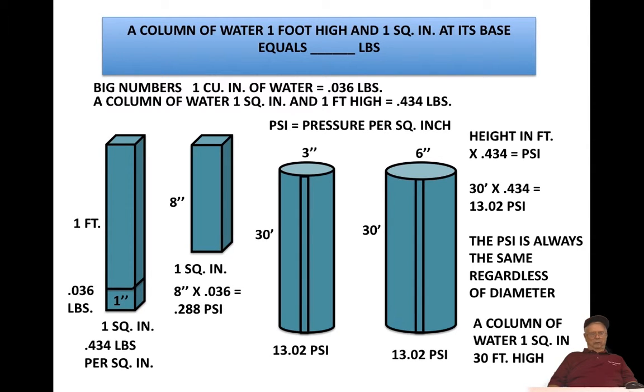A big number is one cubic inch of water equals .036 pounds, and a bigger number is a column of water one square inch and one foot high equals .434 pounds. Now let's take a look. This will be the one that we'll use primarily right here. I've taken and drawn a sketch of a column of water one foot high, one square inch at its base. That's going to exert a pressure of .434 pounds per square inch.